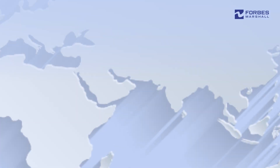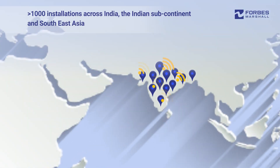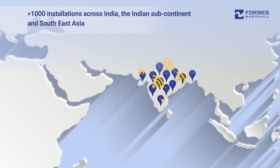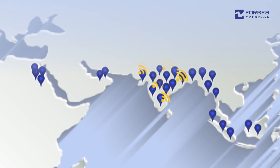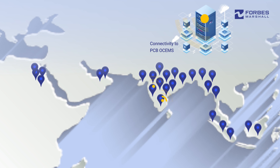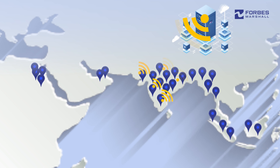Forbes Marshall has supplied over a thousand multi-parameter analyzers with installations spread over India, the Indian subcontinent, and Southeast Asia. Over 500 of these installations are connected to the Central Pollution Control Board of India's online effluent quality monitoring system.